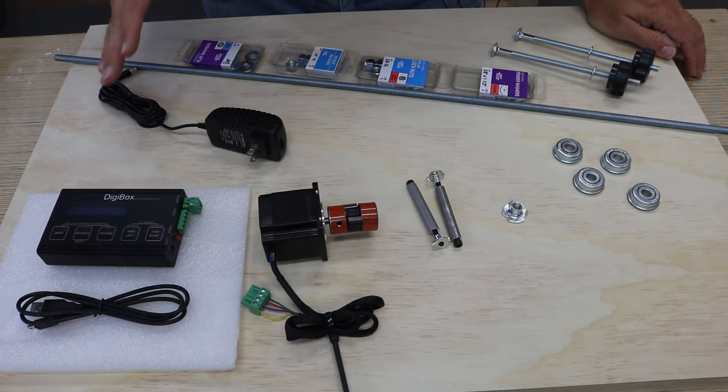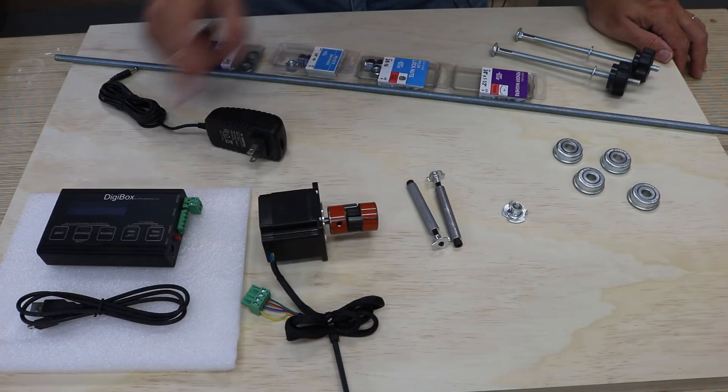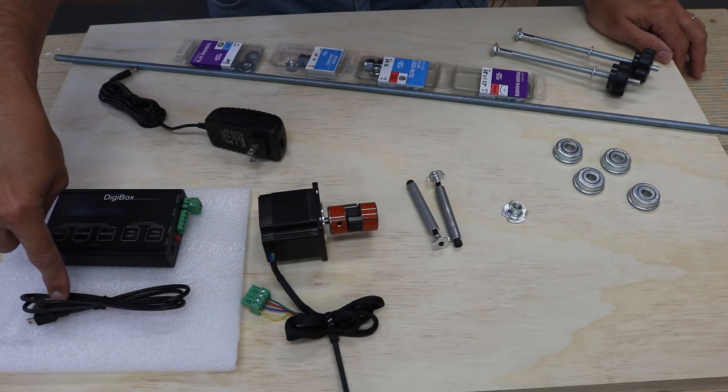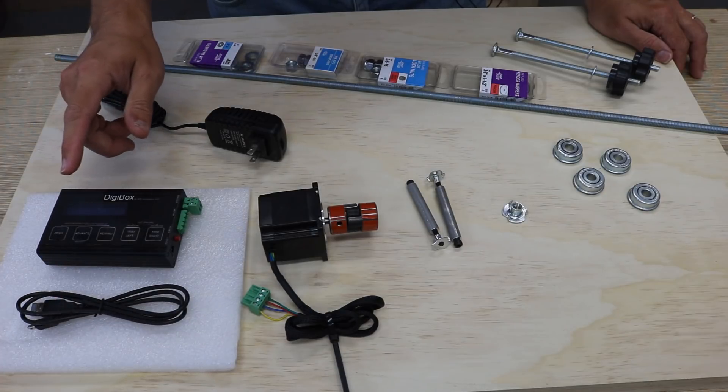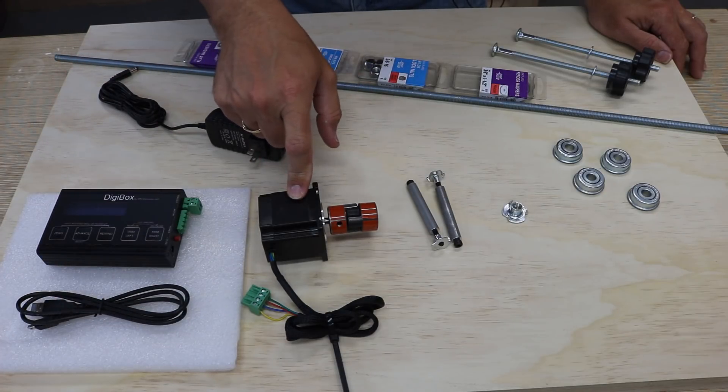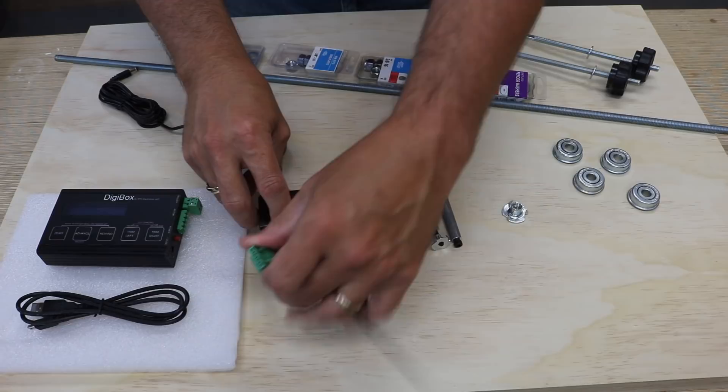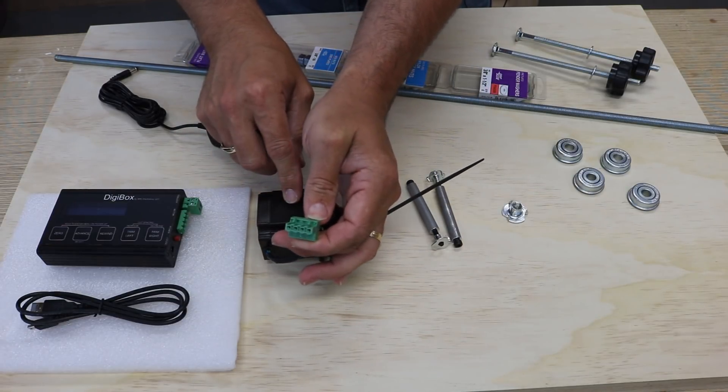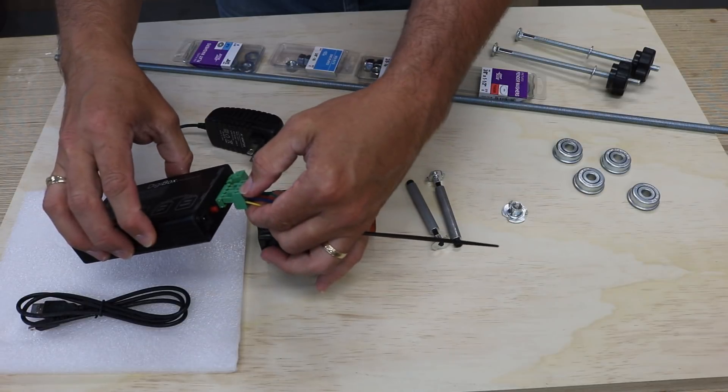This is everything I think you need for this project. The Digibox controller, when you buy it, you get the controller, you get the USB cord to update firmware. The NEMA 23 you have to buy separately, but the controller does come with the connector, and that connector plugs right into the side of the box like this.